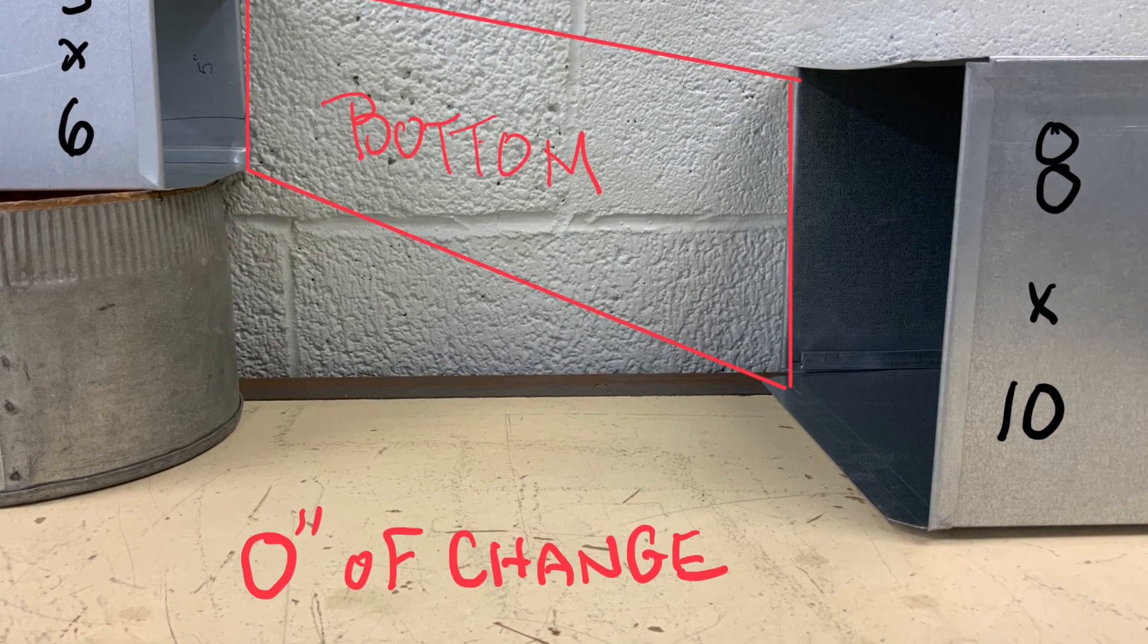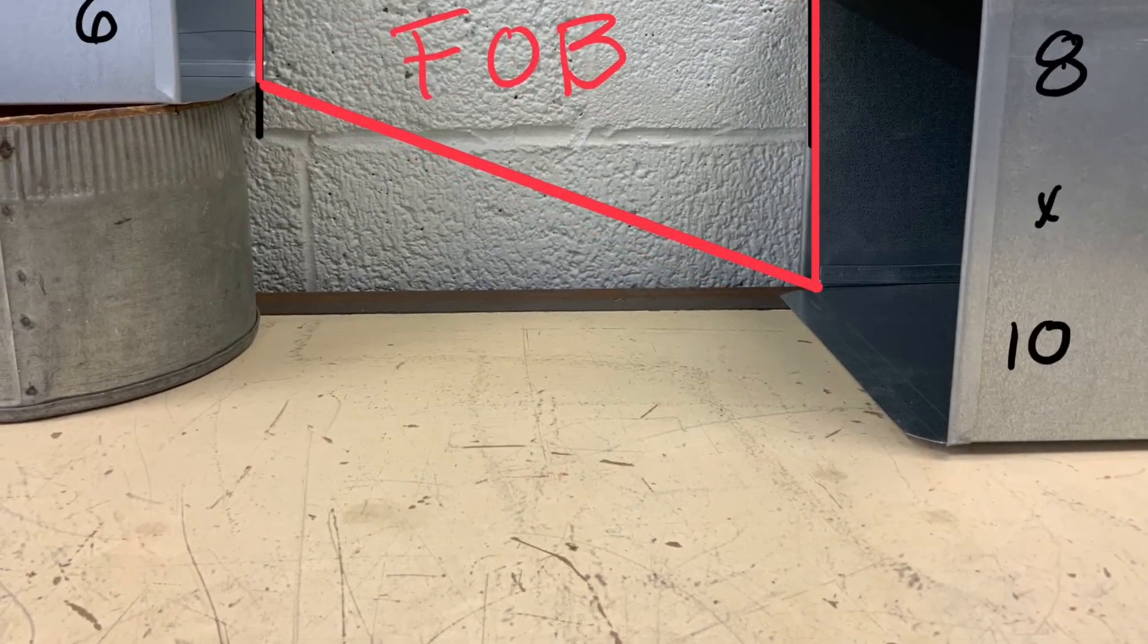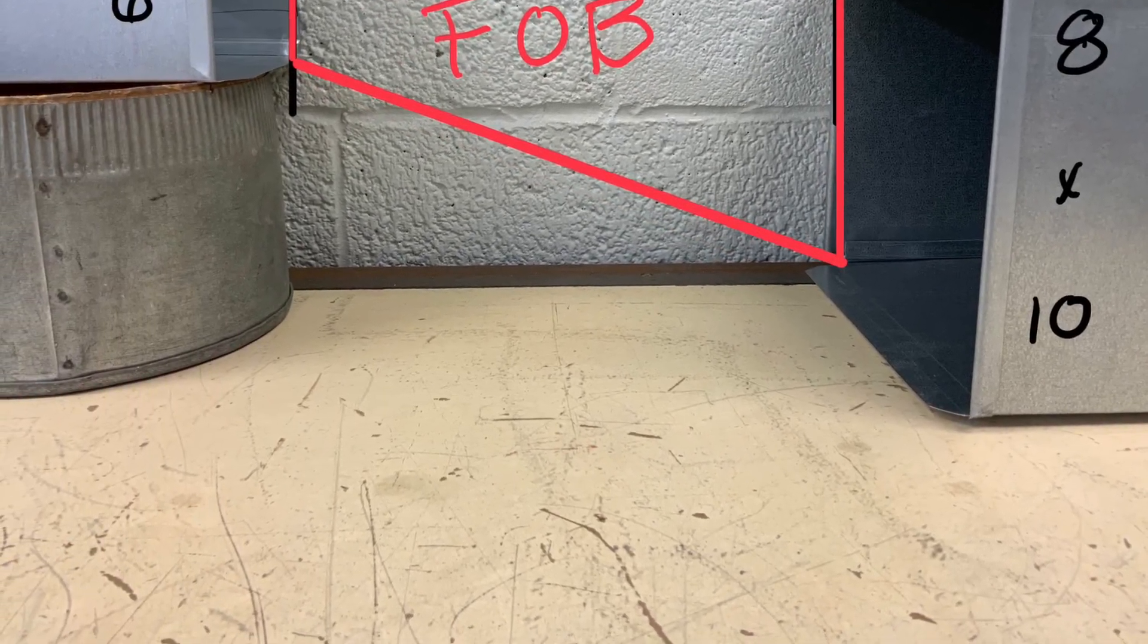In this case, I'm going to call that piece the bottom piece. It has zero slope, also called flat on bottom.